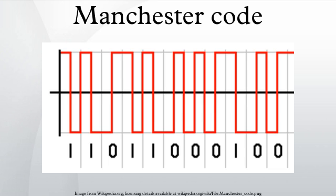Manchester encoding is a special case of binary phase shift keying, where the data controls the phase of a square wave carrier whose frequency is the data rate. Such a signal is easy to generate.